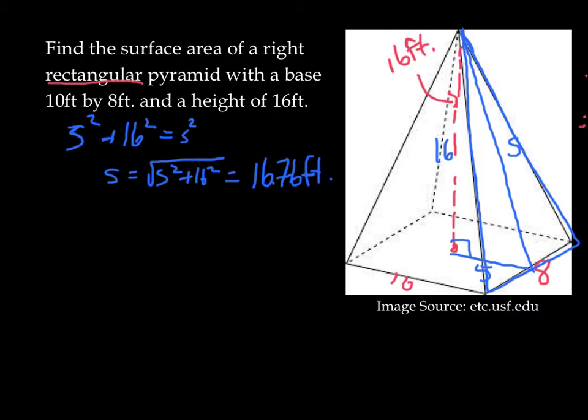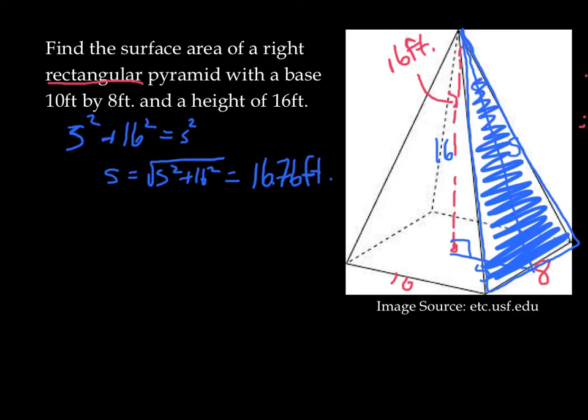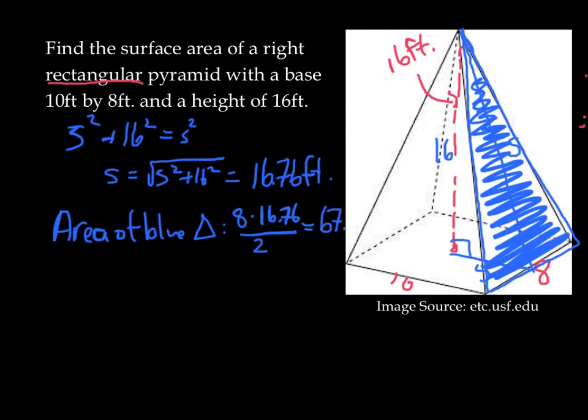That's the slant height on this side. We can use that slant height now to calculate the area of this triangle. So the area of the blue triangle is going to be base, 8, times height, 16.76, divided by 2. And that gives us an area for the blue triangle of 67.05 square feet.